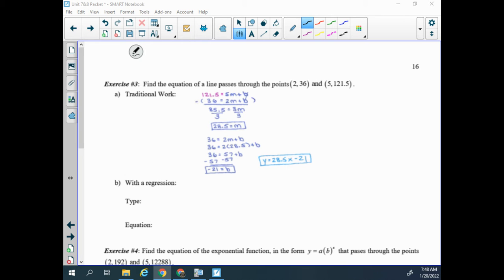This first question says, find the equation of a line that passes through the points (2,36) and (5,121.5).